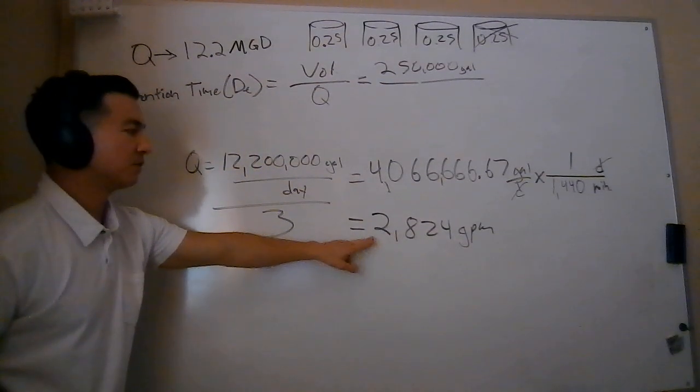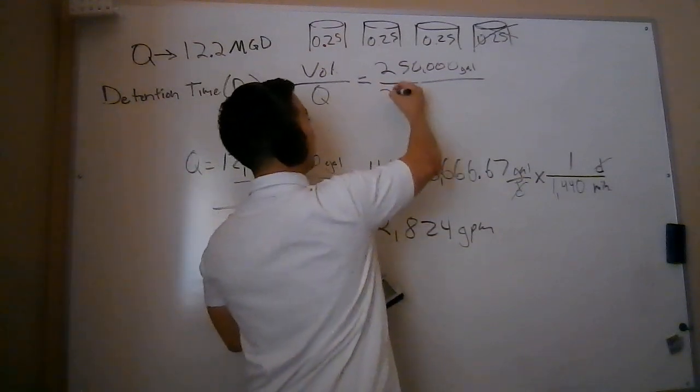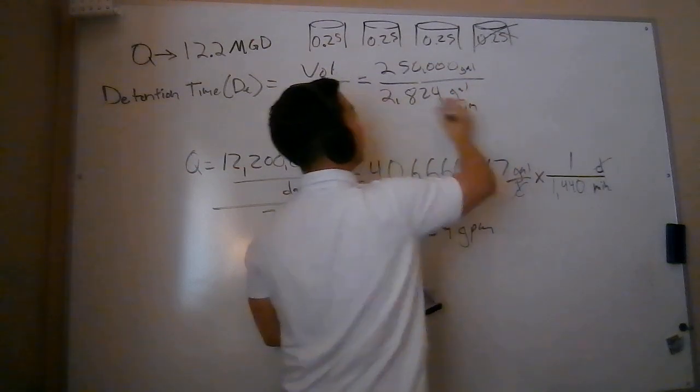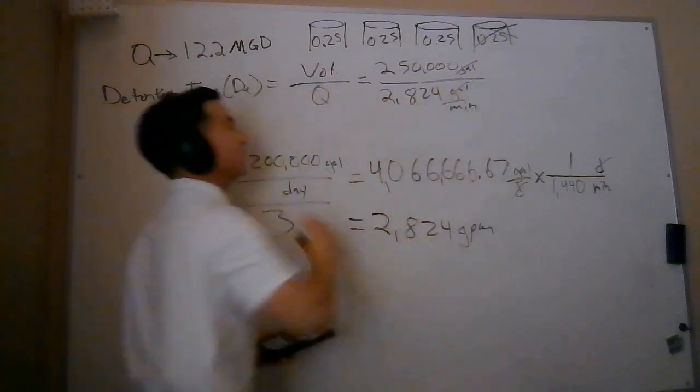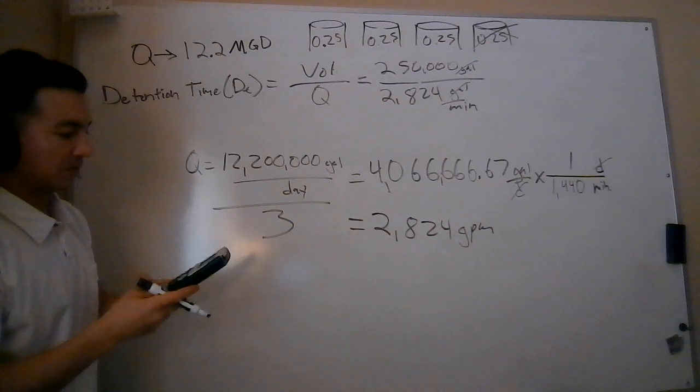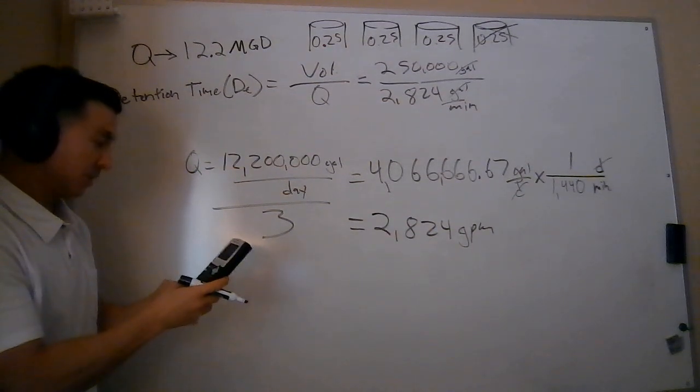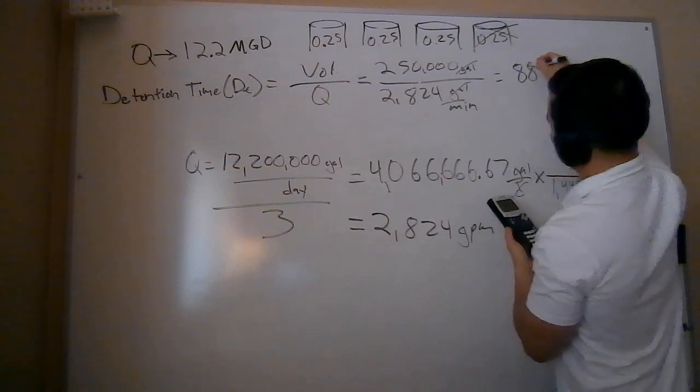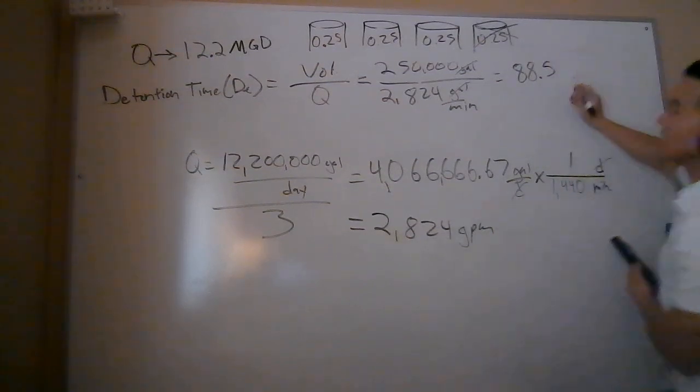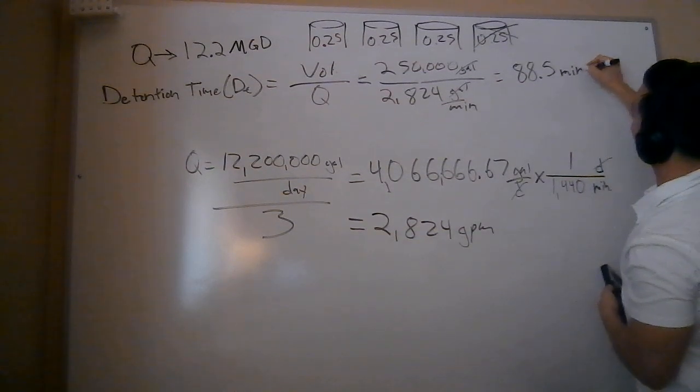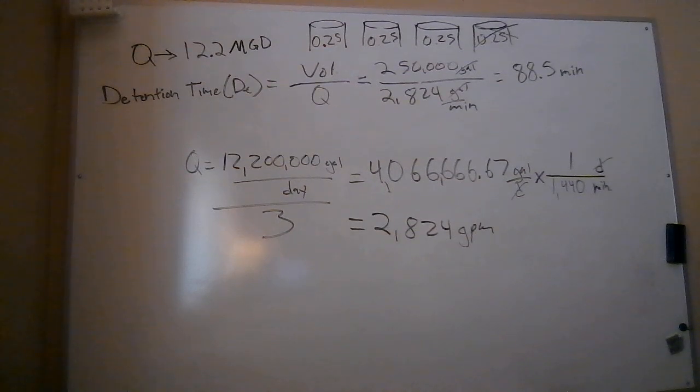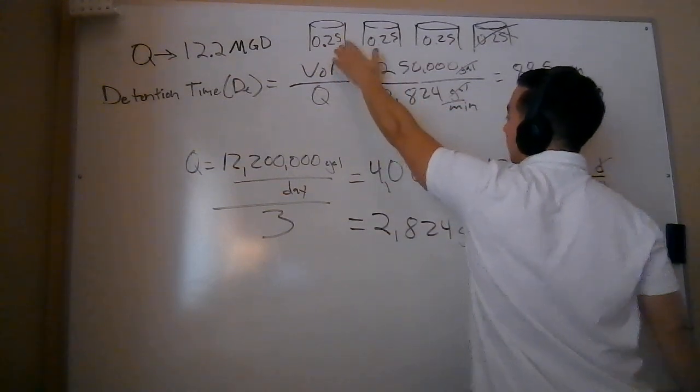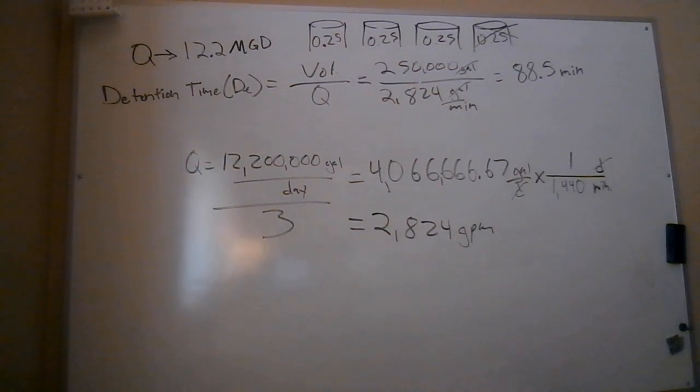So this now is the flow that I'm going to plug in. So now I've got my 2,824 gallons per minute. I look at my detention time formula. Gallons will cancel out with gallons. So what is 250,000 divided by 2,824? I get a total of 88.5. And what are my units? Minutes. Just over an hour, almost an hour and a half. So this is the detention time of how much time water spends in any one of my given clarifiers during the sedimentation process.